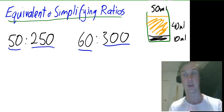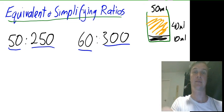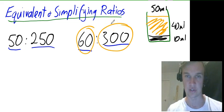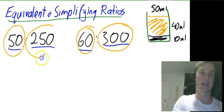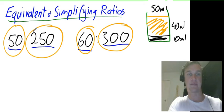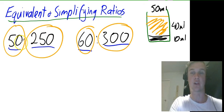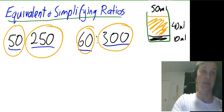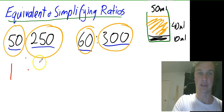Now the way that you simplify a ratio is that you need to find a common factor between the two parts of the ratio. Now it's easy in my case. I know that 50 and 250, the highest common factor here is 50. So if I divide 50 by 50 will give me 1. And then 250 divided by 50 will give me 4.